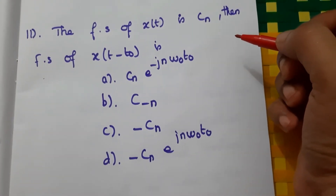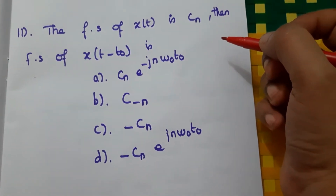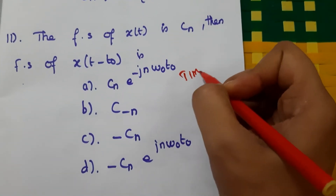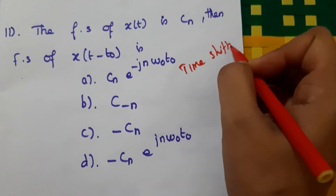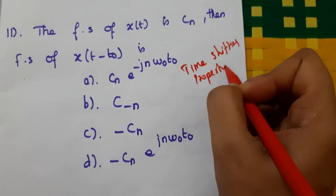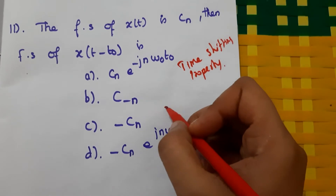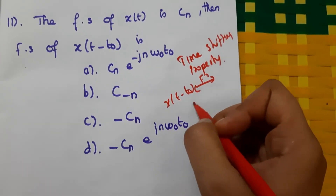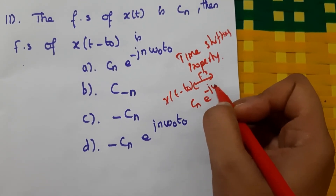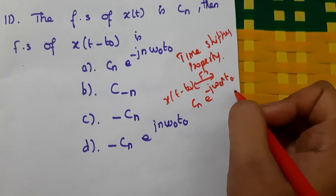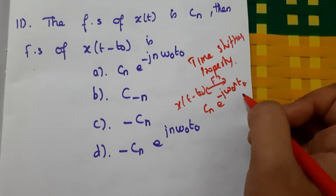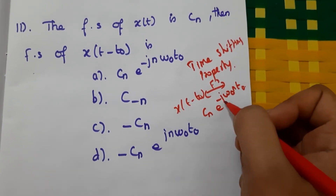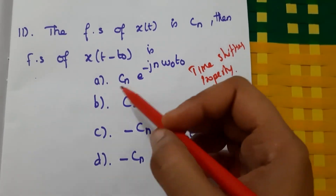Eleventh question: if the Fourier series of x(t) is cₙ, then the Fourier series of x(t − t₀) is found using the time shifting property. By this property, x(t − t₀) gives Fourier series coefficient cₙ e^(−jnω₀t₀). So the answer is A.